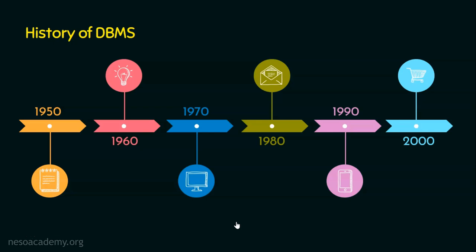Basically, information processing and the automation of data processing is the backbone in the growth of computers. Starting from punched cards to all the latest technologies and tools available till date, everything needs to store and process the data in order to make it meaningful information.